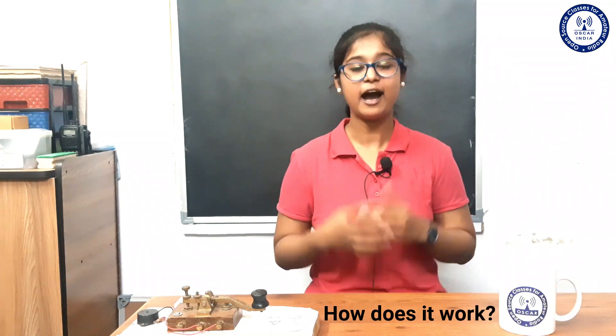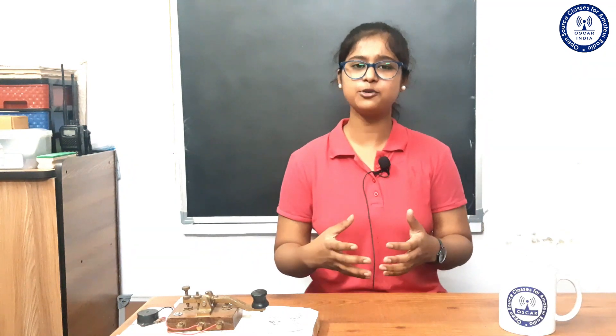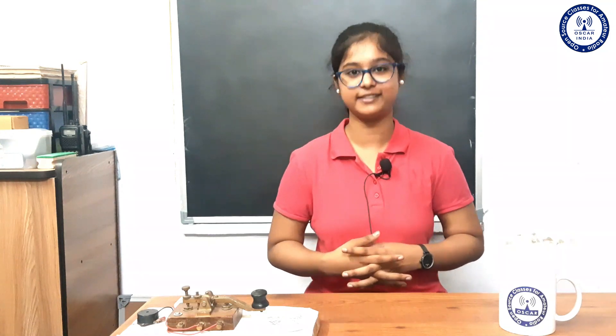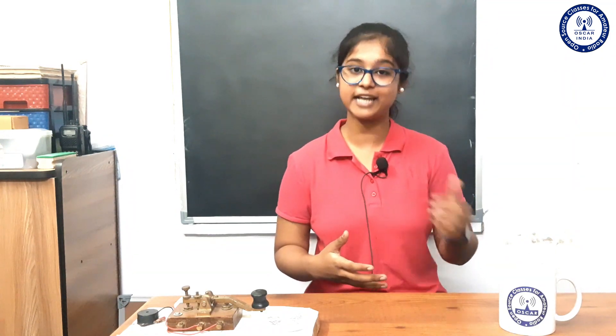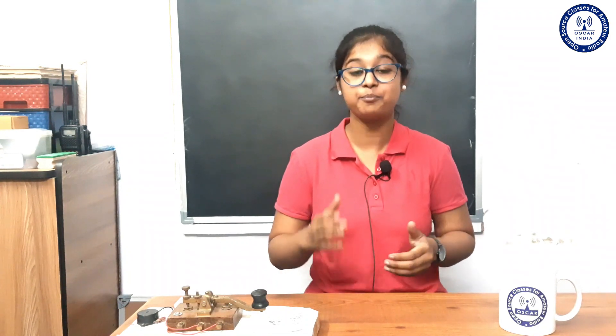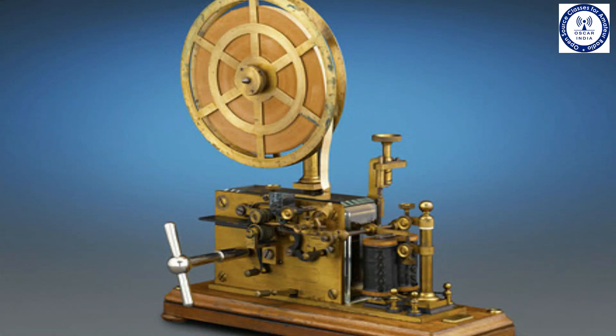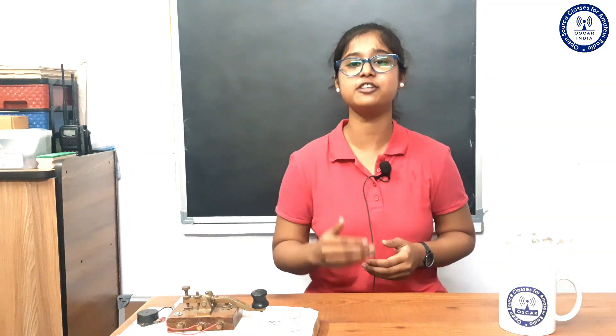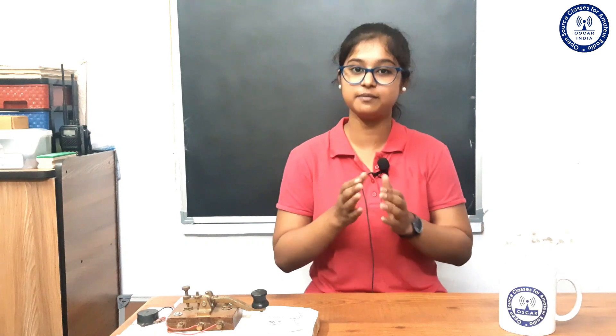Now the most important question is: how does it work? Morse code messages can be sent over long distances by light or pulses. In Samuel Morse's time, the most common way to send a pulse message was via a telegraph, also known as a straight key, which sent pulse messages in the form of electrical current based on the message tapped out using the electric telegraph.